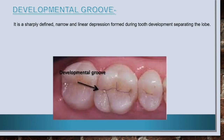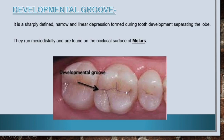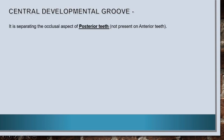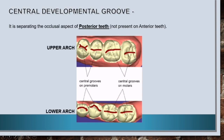Now let's know about the developmental groove. It is a sharply defined, narrow, and linear depression formed during tooth development, separating the lobes. They run mesiodistally and are found on the occlusal surface of molars. The central developmental groove separates the occlusal aspect of posterior teeth and is not present on anterior teeth.